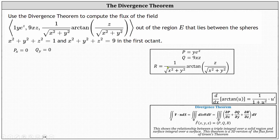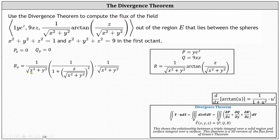Now we need to find the partial of R with respect to z. To do this, we'll use the derivative formula for arctangent of u, which includes the chain rule. Treating x and y as constants, the partial of R with respect to z equals one divided by the square root of the quantity x squared plus y squared, times the partial derivative of the arctangent function with respect to z. Where u is the input of the arctangent function, we have one divided by the sum of one and the square of z divided by the square root of x squared plus y squared, times u prime — the partial derivative of the arctangent input with respect to z — which gives one divided by the square root of x squared plus y squared.